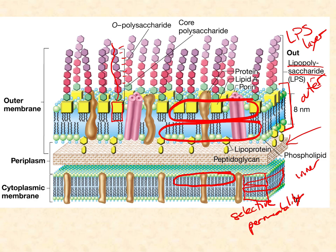If the inner membrane — the cytoplasmic membrane — is all about selective permeability, this outer membrane, the LPS layer, is permeable but not quite so selective. Most of the transport proteins are what we call porins — a water-filled channel where if something is small enough to fit through, it's going to fit through. So this outer membrane is a bit leaky relative to the inner membrane. Most of the selectivity happens at the cytoplasmic membrane; the outer membrane is really just size-selective.